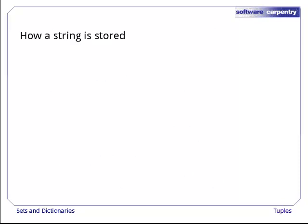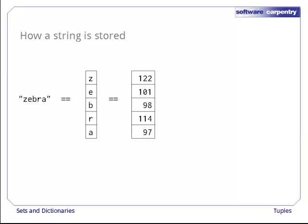For example, let's take a look at how a string is stored in a set. We'll start with the string 'zebra'. The string has five letters: z, e, b, r, and a. Each character is stored in memory as a small integer — 97 for lowercase a, 98 for lowercase b, and so on up to 122 for lowercase z. We can add up these integers to produce a number that will be the same for every copy of the string. This is our hash function.